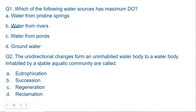Question 2: The unidirectional change from an uninhabited water body to a water body inhabited by a stable aquatic community is called: A. Eutrophication, B. Succession, C. Regeneration, or D. Reclamation. The correct answer is B. Succession.